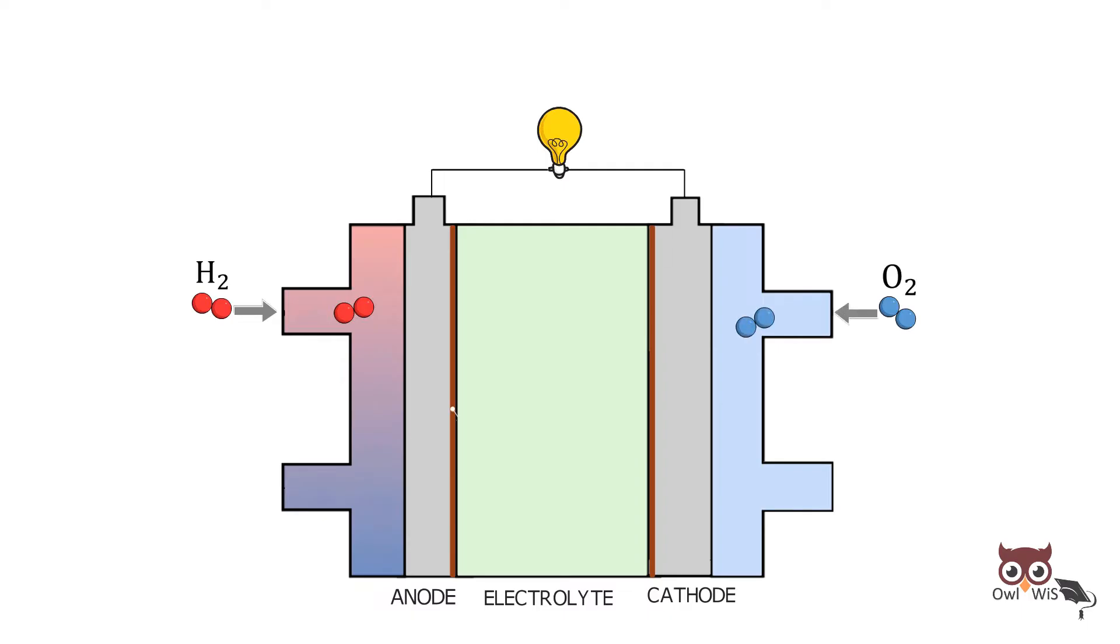At the anode, the platinum catalyst causes the hydrogen to split into positive hydrogen ions, protons, and negatively charged electrons. The polymer electrolyte membrane allows only protons to pass through it and reach the cathode. The electrons travel through external circuit producing electric current.